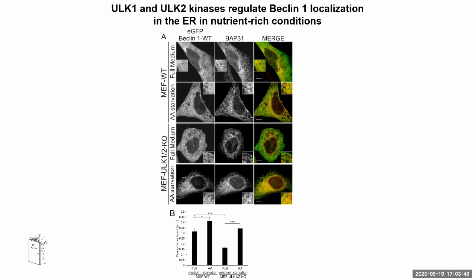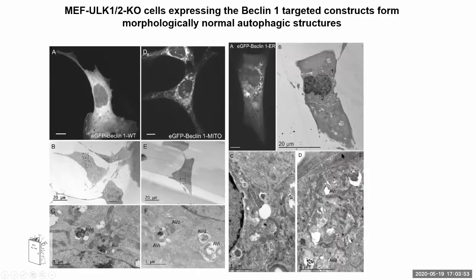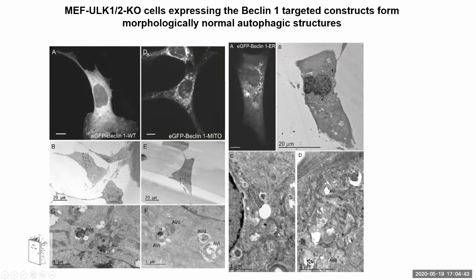Once we saw that ULK knockout cell lines can induce autophagy, we wanted to see how these structures looked. We did correlative light electron microscopy, going to check fluorescent cells of interest under the electron microscope. In cells expressing Beclin-1 wild-type, we could find both degradative later autophagic structures and initial immature autophagic structures. With Beclin-1-mito we found similar structures, and with Beclin-1-ER we also found autophagic structures. All structures the cells were able to form were looking normal and were also normal in size.